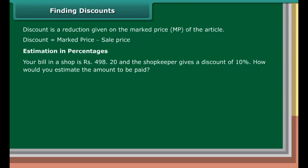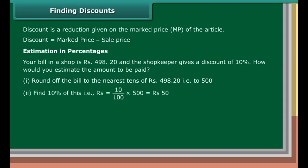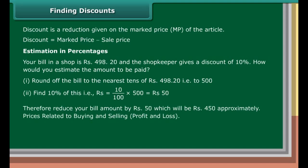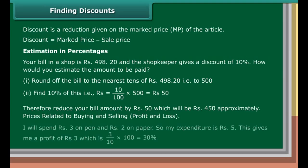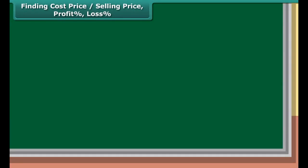Finding discounts. Discount is a reduction given on the market price (MP) of the article. Discount equals market price minus sale price. Estimation in percentages: Your bill in a shop is rupees 498.20 and the shopkeeper gives a discount of 10%. Step 1: Round off the bill to the nearest rupees 498.20, that is, to 500. Step 2: Find 10% of this, that is, rupees 10 upon 100 into 500, which equals rupees 50. Step 3: Therefore, reduce your bill amount by rupees 50, which will be rupees 450 approximately.